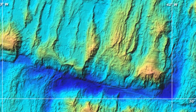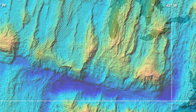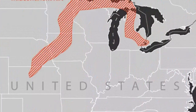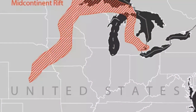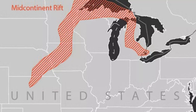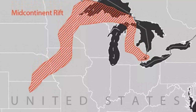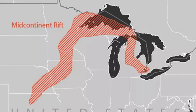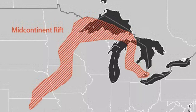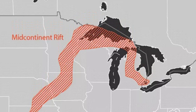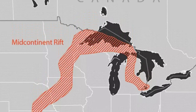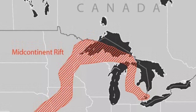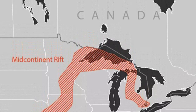Not all continental rift valleys develop into full-fledged spreading centers. Running through the central United States is a failed rift that extends from Lake Superior into central Kansas. This once-active rift valley is filled with volcanic rock that was extruded onto the crust more than a billion years ago. Why one rift valley develops into an active spreading center while others are abandoned is not yet known.